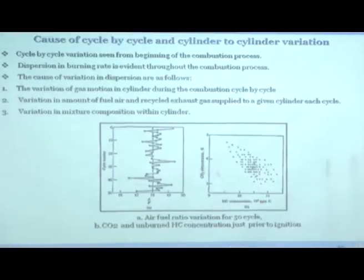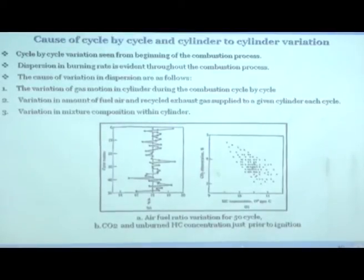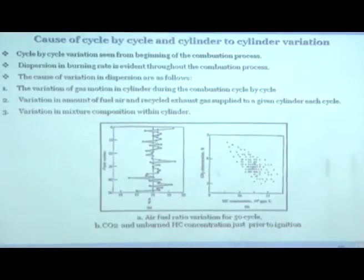When you have such a large variation in mixture concentration, you can obviously expect different power outputs and different maximum in-cylinder pressures on the P-theta diagram. This explains the reasons for cyclic variability inside the spark ignition engine.